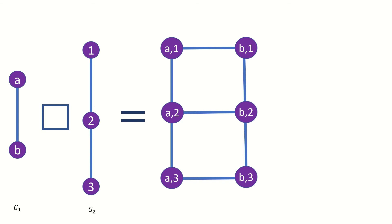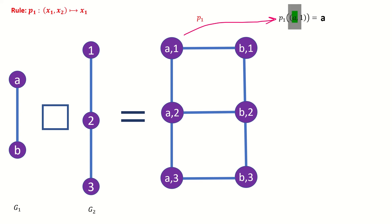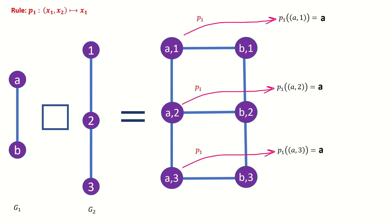Using this Cartesian product of graphs as our first example, let's find what the projections are for each vertex in the product. Starting with a projection onto the first factor, what is p sub 1 of a1? By our rule for the first projection function, p sub 1 of a1 is a, the first coordinate in our ordered pair. Similarly, p sub 1 of a2 and p sub 1 of a3 are also a. Continuing, we get the following vertices as our projections under p sub 1 of each vertex in the product graph.